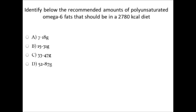Let's consider this problem: identify the recommended amount of polyunsaturated omega-6 fatty acids that should be in a 2,780-calorie-a-day diet. We know the recommended range is 5 to 10% of DRI calories. The DRI calories here are 2,780. So we do 5% of 2,780, which is 139 calories; divide that by 9, because there are 9 calories per gram, and we get 15 grams for the 5%. For the 10%, we get 278 calories divided by 9, which gives 31 grams. So the range is 15 to 31 grams.